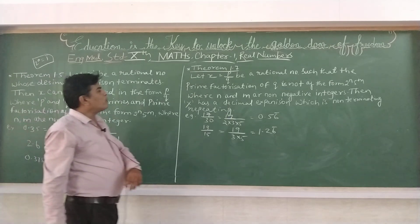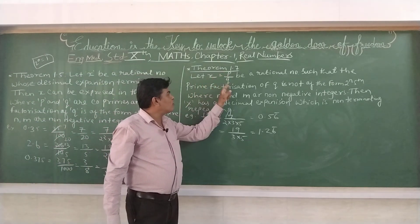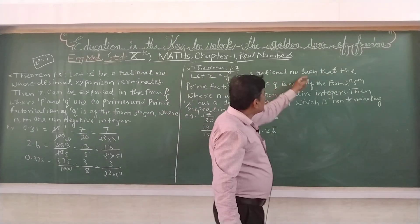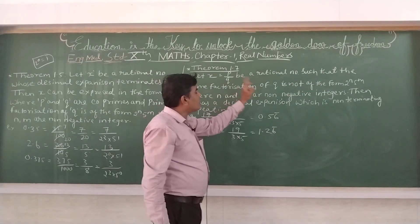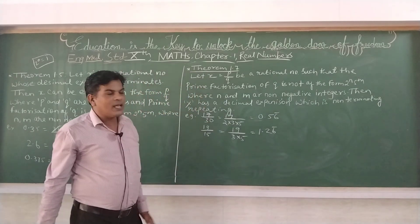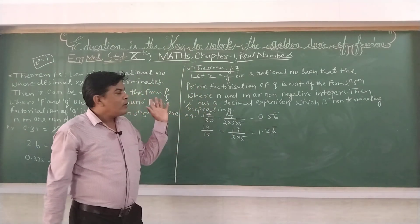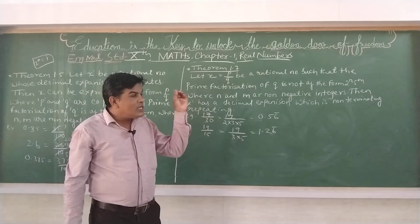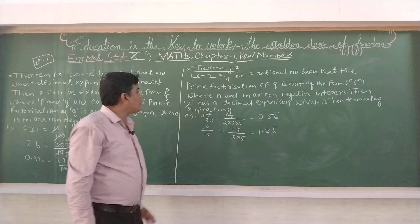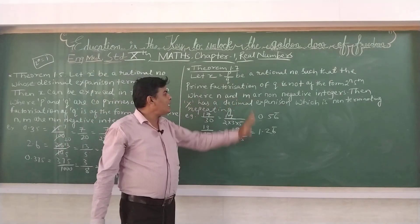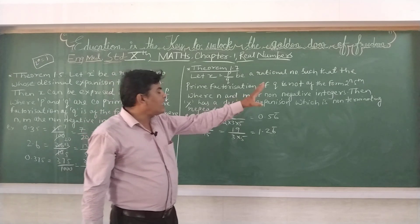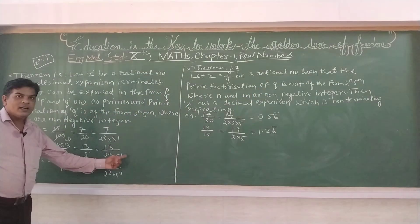Next, in Theorem 1.7, we will study: let x equal to p upon q be a rational number such that the prime factorization of q is NOT of the form 2^n × 5^m. Hum aise ek rational number leenge jiska jo denominator hoga, uski prime factorization 2^n aur 5^m form mein nahi hogi, where n and m are non-negative integers.